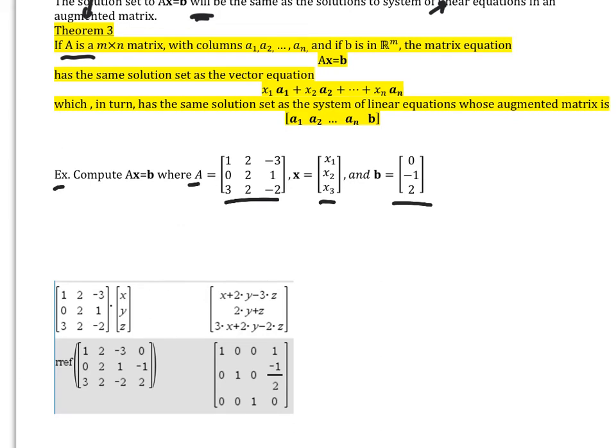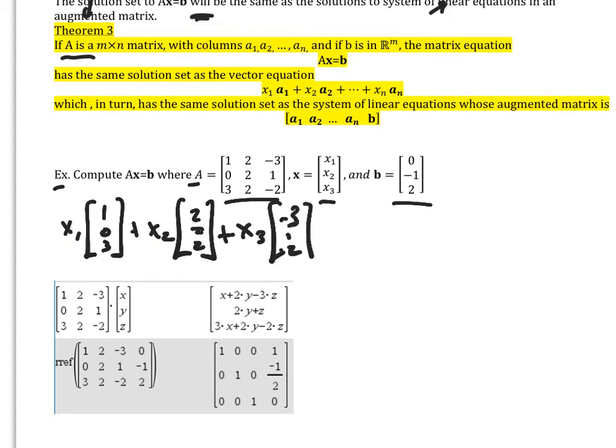So if I do it in vector form, I can write it as such: X1 times [1, 0, 3], and then X2 times [2, 2, 2], and then X3 times [-3, 1, -2]. And I'm just going to stop there for AX. So this is representative of AX.